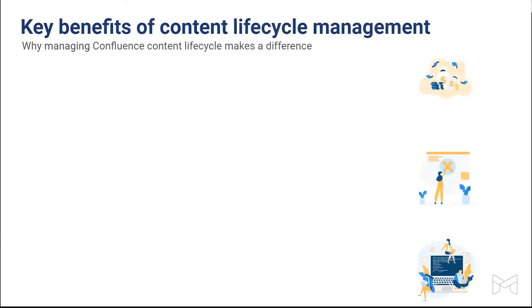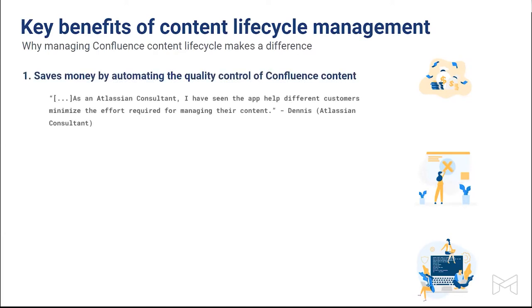When I summarize the benefits of content lifecycle management, I came up with three things. The first is automation. Better Content Archiving's content rules are basically automation, and as is always the case with automation, you can save money and reduce workload on your Confluence admins. They don't need to manually reach out to Confluence users and chase them about their duties — you can automate all of this with rules and do it automatically at the right time.